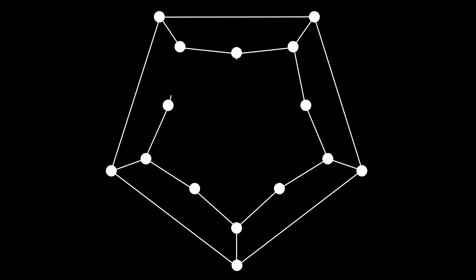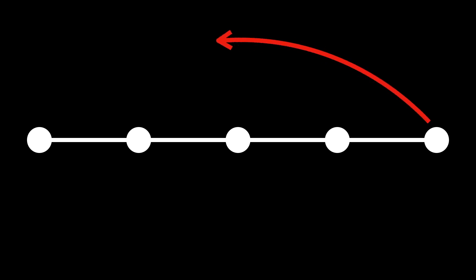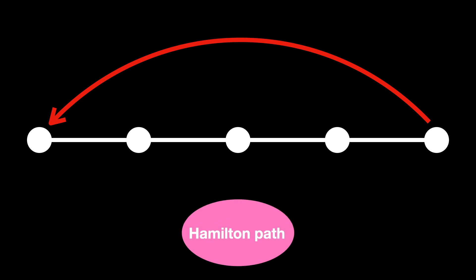The more complex versions of these combinations are not random — they have names. We have this graph, and we want to visit every vertex and come back to the original one. That's a Hamilton cycle. But what about a graph where I can walk on every vertex but can't return to the initial one to make it a cycle? That is a Hamilton path.